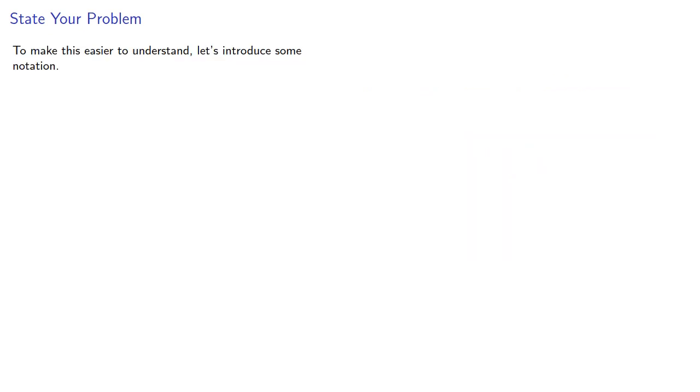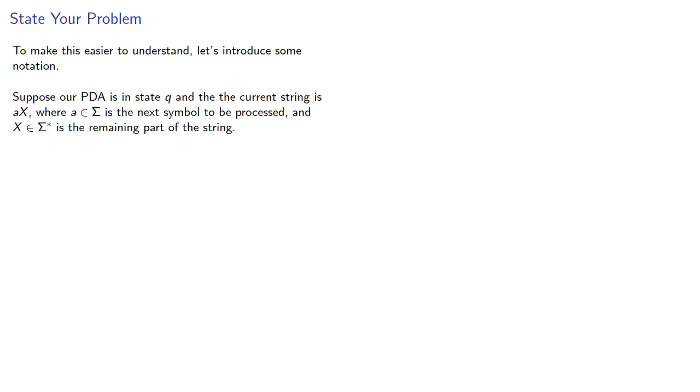To make this easier to understand, let's introduce some notation. Suppose our pushdown automaton is in state q, and the current string is ax, where a is the next symbol to be processed, and x ∈ Σ* is the remaining part of the string. Also, suppose our stack contents are bγ, where b is a stack symbol, and it's the top and only accessible entry in the stack, and γ ∈ Γ* is the remaining entries of the stack.